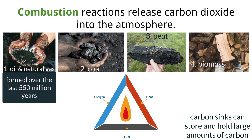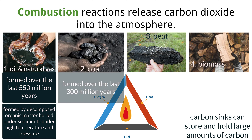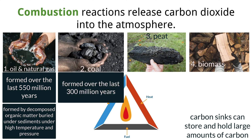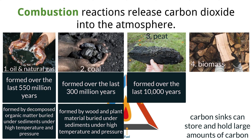Natural gas and oil found in Earth's crust were formed over the past 550 million years by decomposed organic matter that was buried under sediments; high temperatures prompted chemical changes to create the oil and natural gas trapped within porous rocks. Coal was mostly formed around 300 million years ago by accumulated wood and plant material that was buried under sediments; heat and pressure over time compacted the carbon molecules from these organisms and created coal.